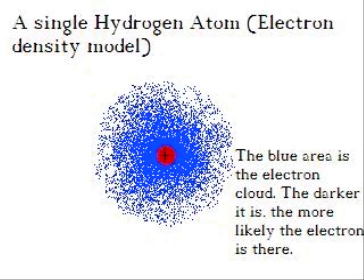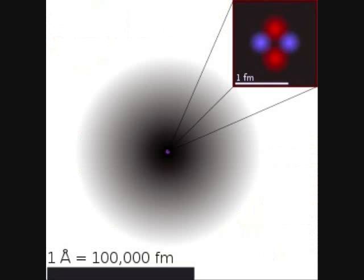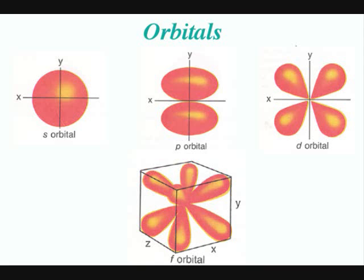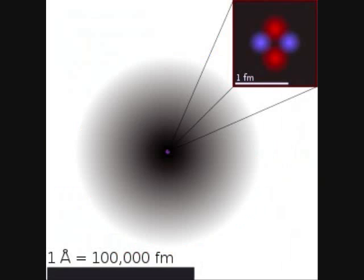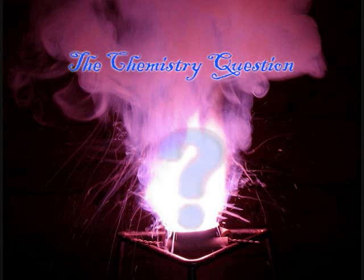Now we just have a few things to tweak in our understanding. First, the nucleus is much smaller. Second, all of the electron orbitals have different shapes. Third, the nucleus moves as well. There we go — our current model of the atom. Thank you for watching the Chemistry Question. Be sure to subscribe and leave any questions or suggestions in the comments below. Until next time.